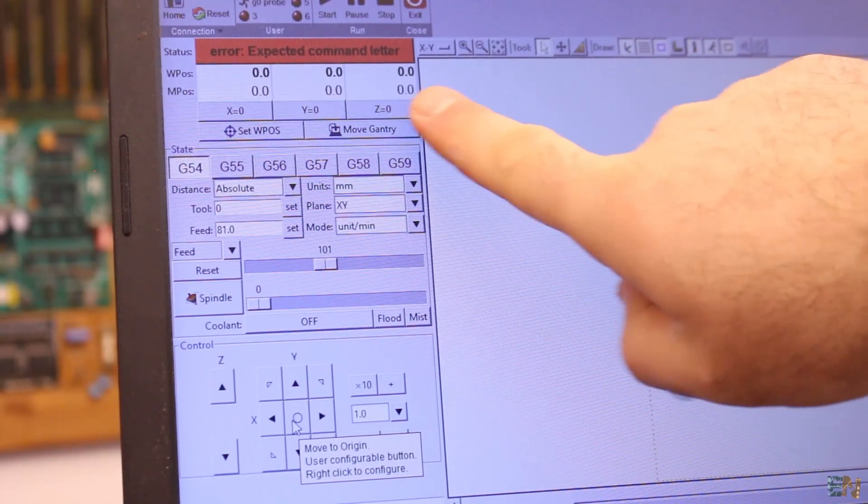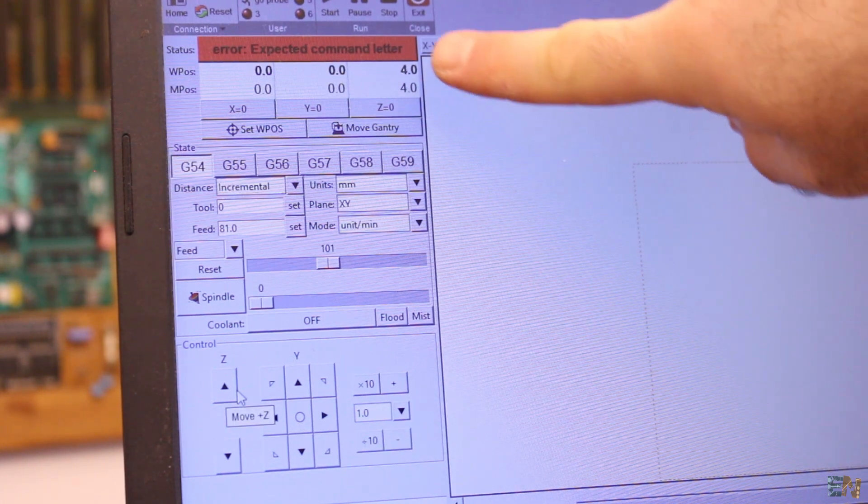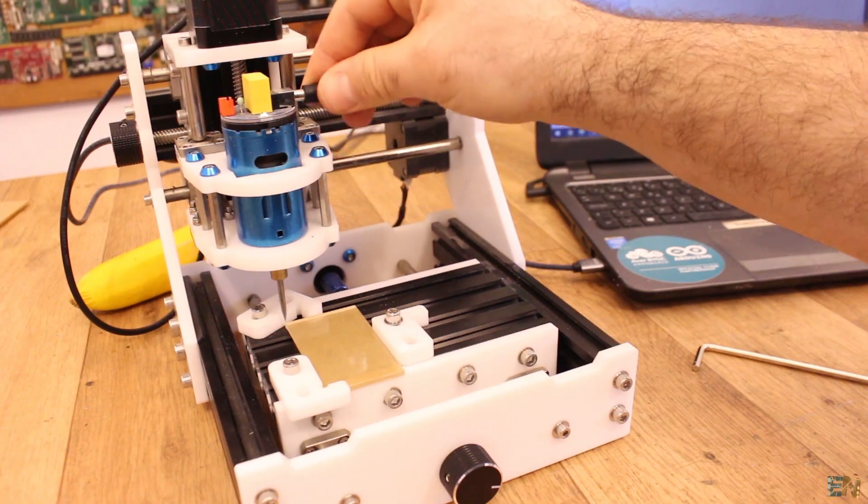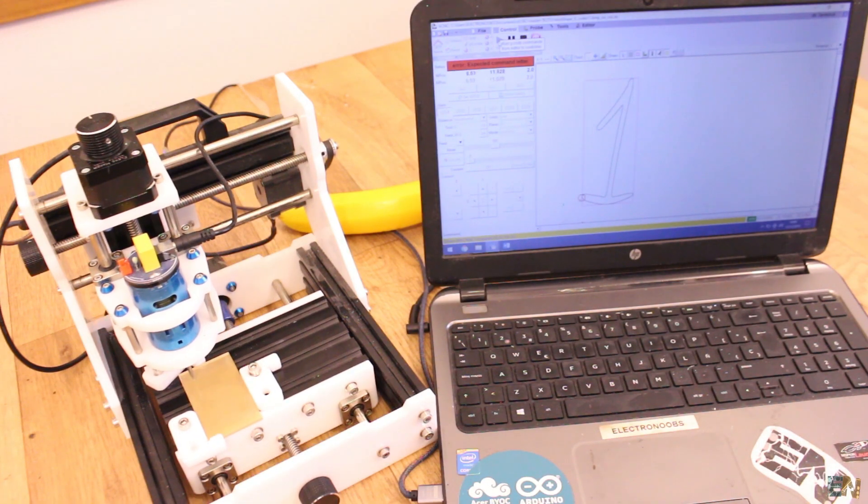Now you have to lower the drill till it slightly touches the acrylic board. Then in BCNC, make that the 0,0,0 position and then lift the drill a little bit so it won't mess with the acrylic board. Now you can connect power to the drill. Press start and the number will be engraved.